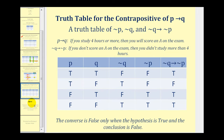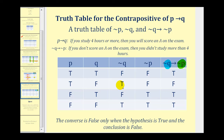Now let's look at the contrapositive of if P then Q, which means we examine if not Q then not P. We list P, Q, not P, and not Q, with the conditional as the last column. Notice that I switched the order of not Q and not P to make the analysis a little easier. Again, I'm looking for when the hypothesis is true and the conclusion is false — that is, true-false — and here it is. Everything else in this column is true.